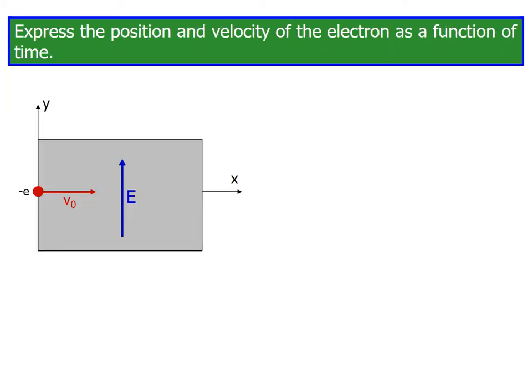Let's represent position and velocity as function of time. The electron enters with velocity v0. Electric field direction, we have x axis and y axis. Force FE is downwards. FE equals qE, which equals minus e times E, equals minus eE j hat because this is negative y axis.